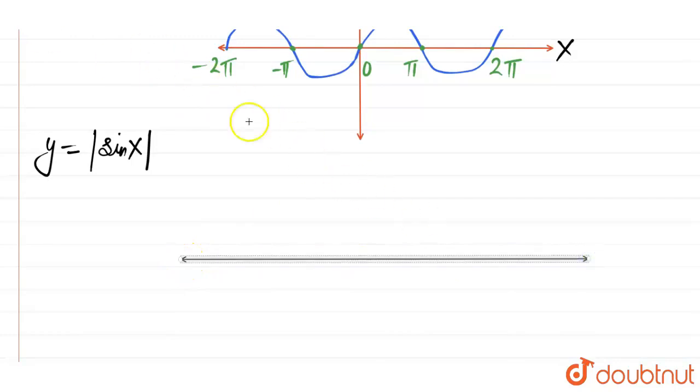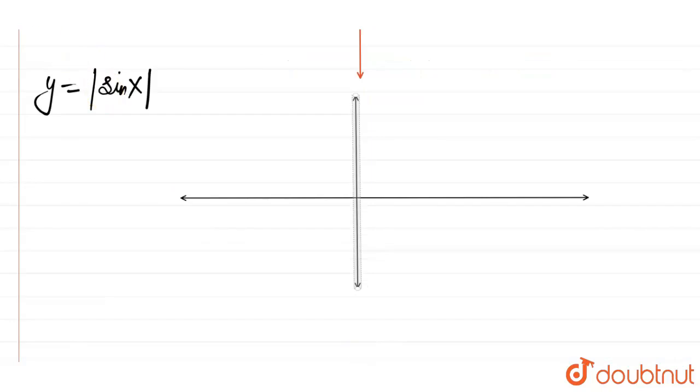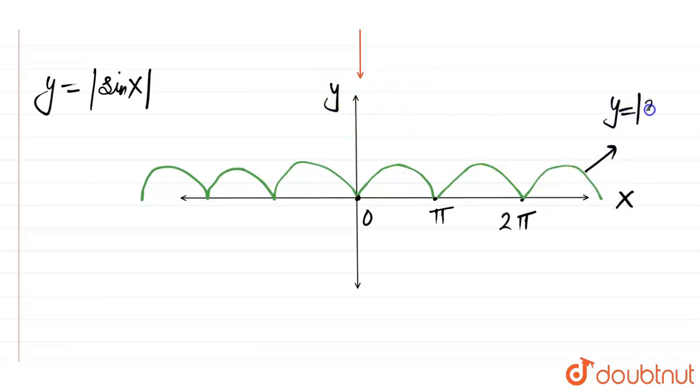This is x axis. This is y axis. And the graph would look like something like this. So this graph would be periodic. With period π, you can see this is 0. This is π. This is 2π. And so on like this. This is x axis. This is y axis. This is graph of y equal to mod of sin x.